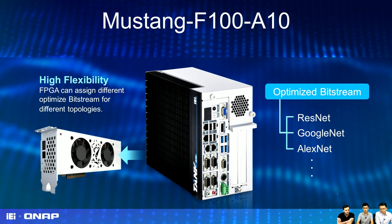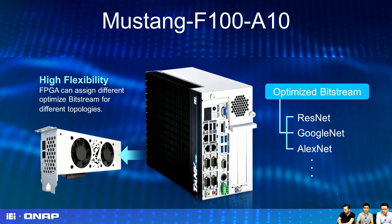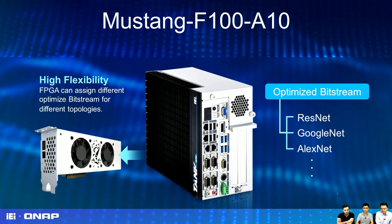The value of FPGA in deep learning is this flexibility. When using neural network topologies, you have many layers of network and different decision strategies for the final result — hardware requirements differ by application and design. So flexibility in the AI field is very important. The Mustang F100 can update its bitstream topology via the PCIe interface, so you can easily change the bitstream to optimize for your application and use different topologies like GoogLeNet, AlexNet, or ResNet.